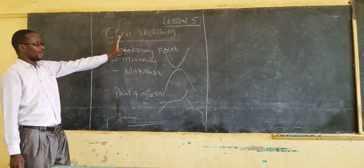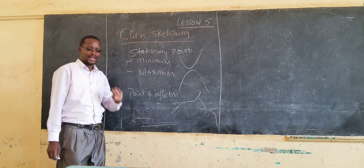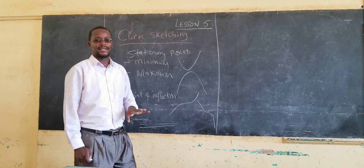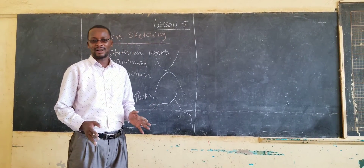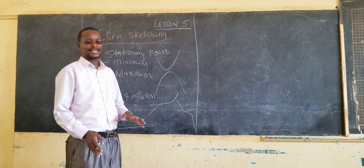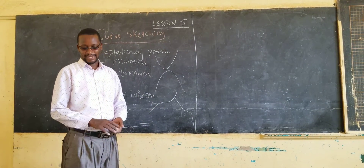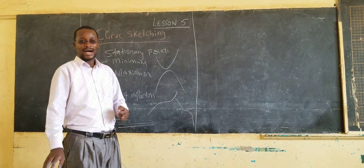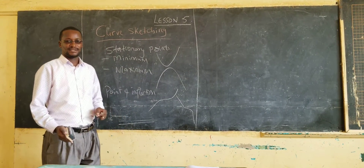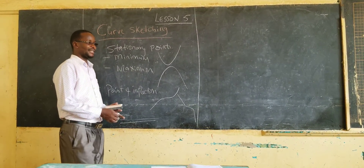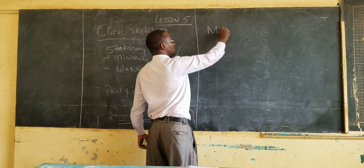When we are sketching a curve, an accurate drawing is not required. You will not take graph paper and start drawing the curve the way we are normally used to. However, we need the main features of that curve — just the main features — and we have two main features.